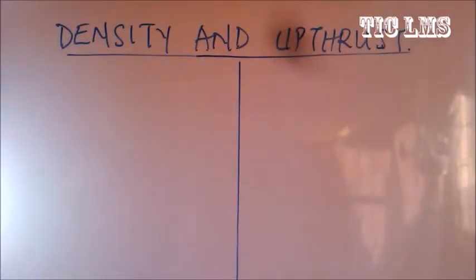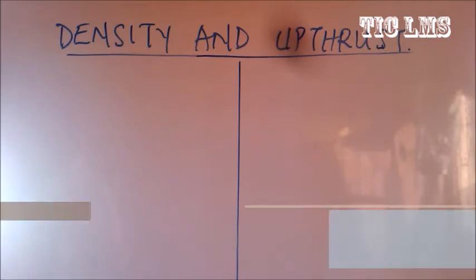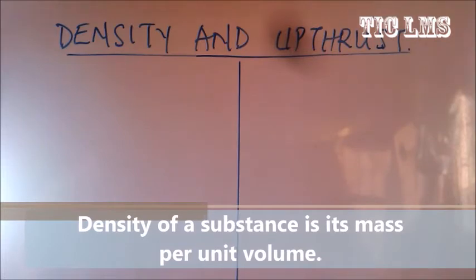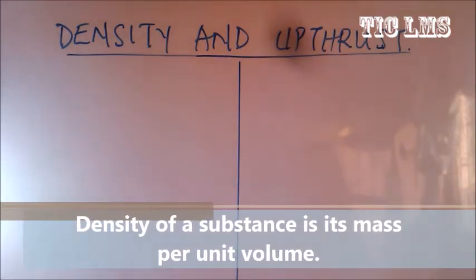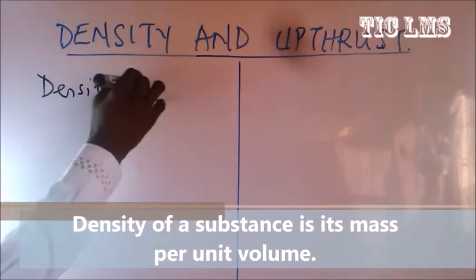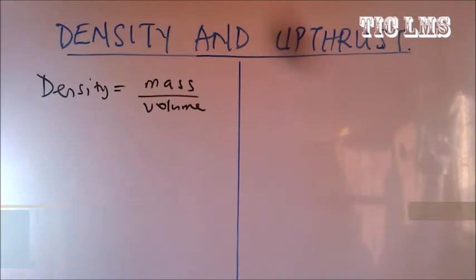Good day class, welcome to our physics class. Today we are looking at the topic density and upthrust. When we talk about density, we are talking about the mass per unit volume of a substance. So the density of a substance is defined as mass per unit volume, meaning density is equal to mass over volume.